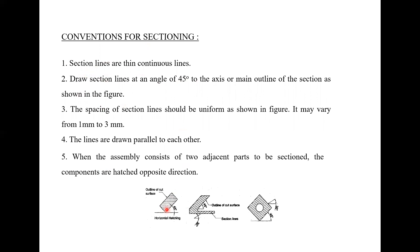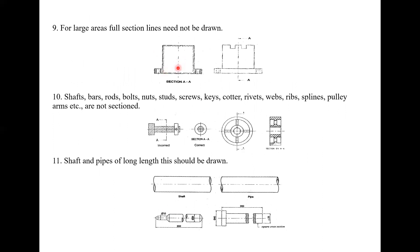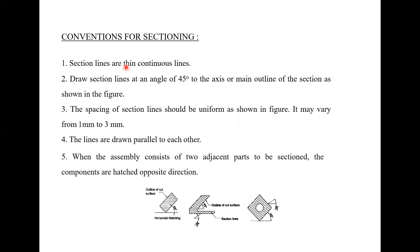Draw section lines at an angle of 45 degrees to the axis or main outline of the section. The spacing of section lines should be uniform — it may vary from 1 mm to 3 mm. For smaller objects, the hatching line spacing can be adjusted accordingly.